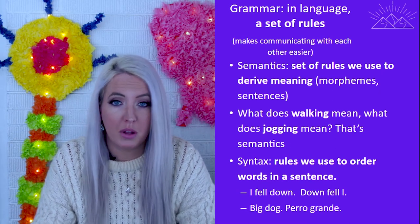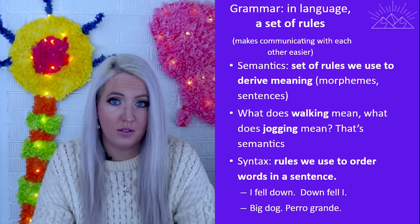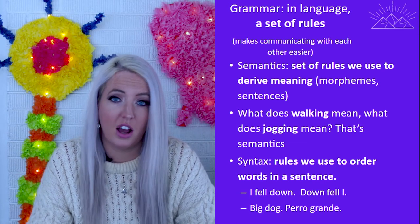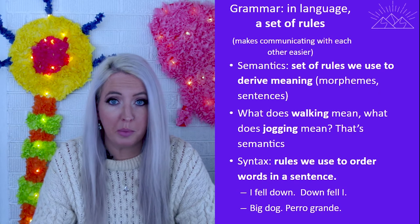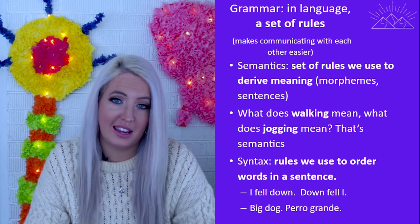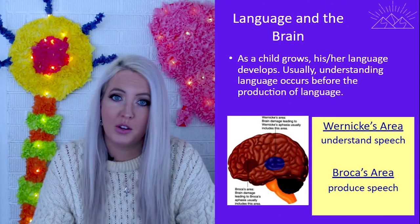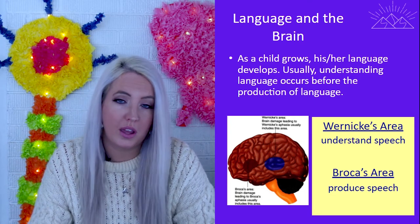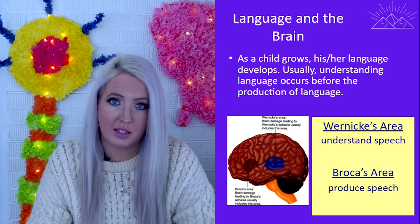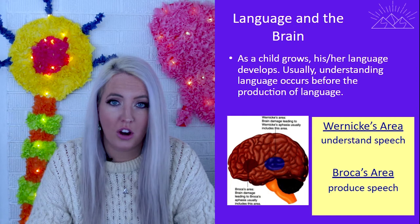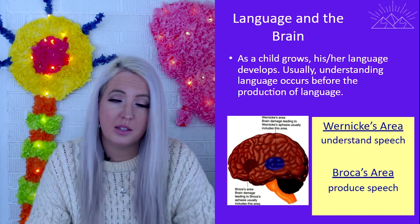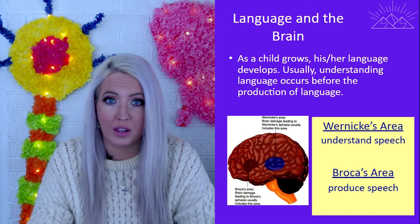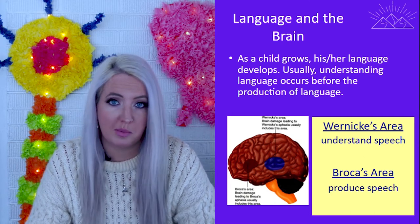Together, these elements help us build the language we use to communicate. In the brain, we see this taking place in Wernicke's area, where we understand speech, and Broca's area, where we produce speech. As we are developing and growing, these brain areas develop along with us to help us create words in the language that we speak.